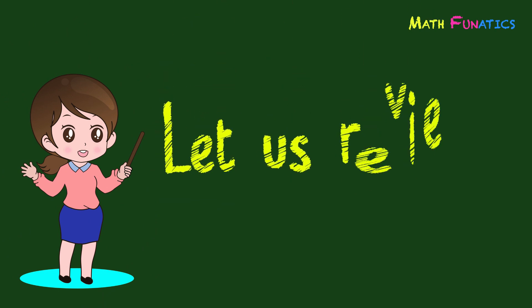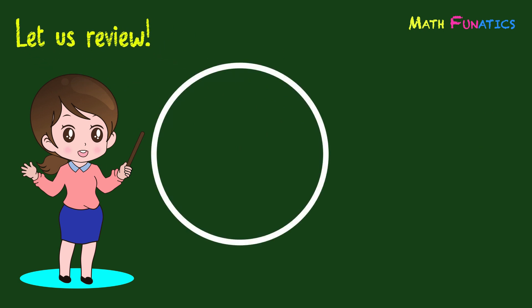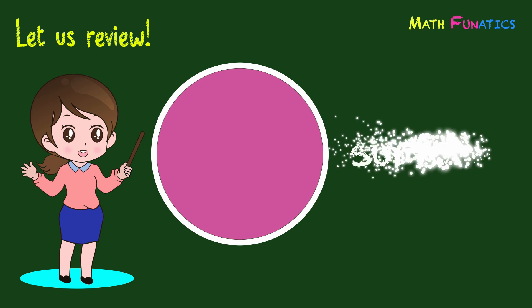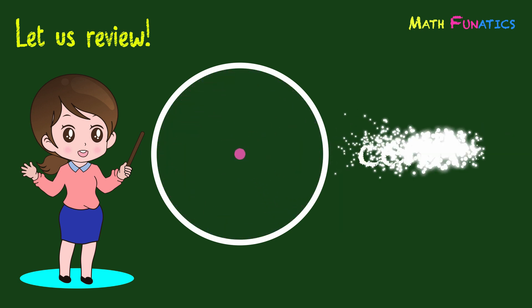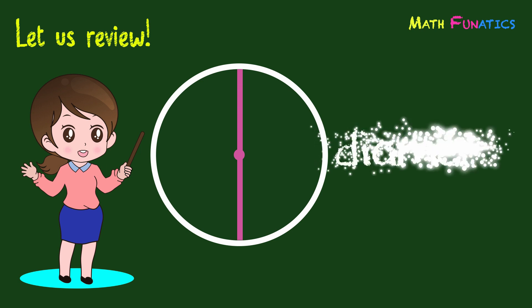Now let us review and make a recap of what you have learned today. So the parts of a circle are the surface, the center, radius, chord, and diameter.